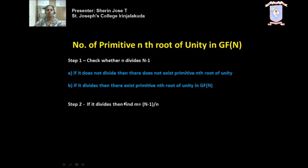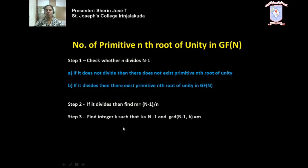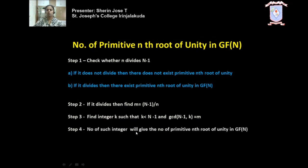In the second step, if n divides n minus 1, you have to find how many primitive roots there are. First, find m equal to (n minus 1) divided by n. Then find all integers k that are less than n minus 1 such that gcd(n minus 1, k) equals m. You have to list all such integers and count how many there are. That count will give you the number of primitive nth roots of unity in GF(n).